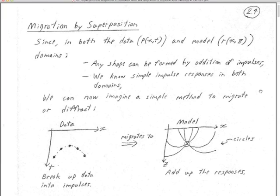Yet if you take the 757 class, you'll find out that it's actually a start at a full elastic wave inversion of your reflection data. Step one is basically a migration by superposition, amazingly enough.